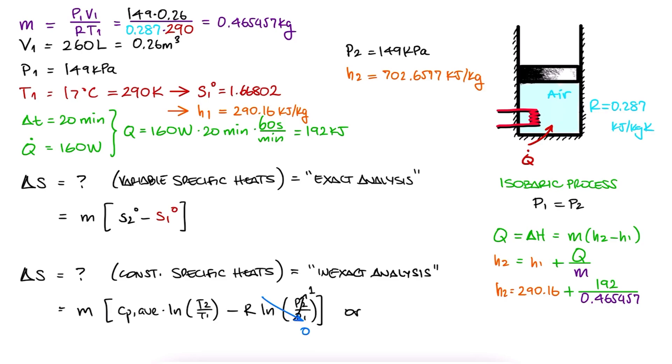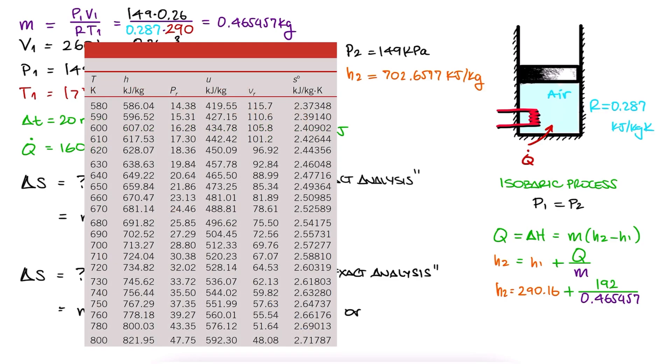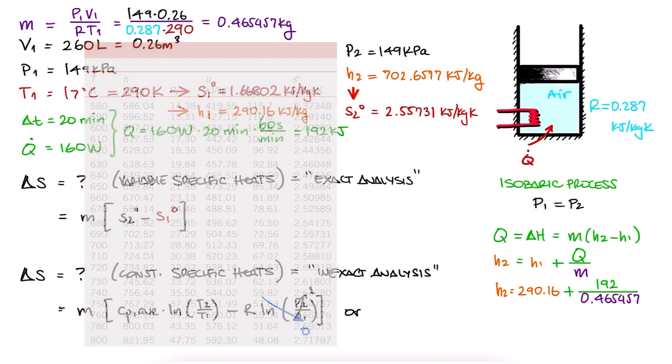And with this value, we can look it up in the tables for air to find the reference entropy at state 2. Since H2 is 702.65 and there's a 702.52 value in the table, we'll just go with the reference entropy value for it, 2.55731 kJ per kgK. We substitute the mass and the two reference entropy values, and we find the change in entropy.